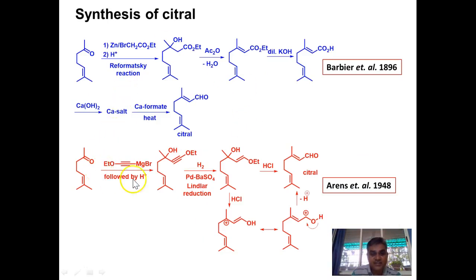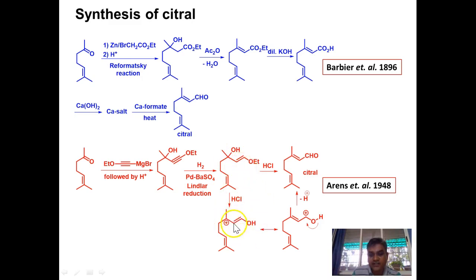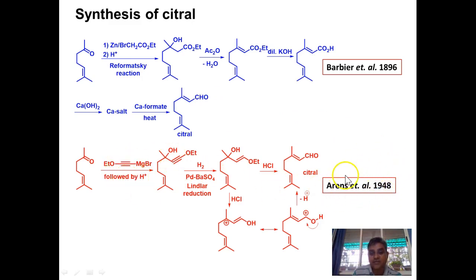An alternative synthesis uses Grignard reagent instead of the Reformatsky reagent. A Grignard reagent undergoes nucleophilic addition across the carbonyl to give a propargyl tertiary alcohol. This undergoes partial reduction with Lindlar's catalyst to give an enol ether, and the enol ether on hydrolysis gives an aldehyde. Simultaneously, dehydration of the tertiary alcohol occurs via protonation to give a carbocation, followed by an allylic shift of the double bond, ultimately yielding the citral molecule. Both syntheses date to 1896, with the Grignard-based route developed after the discovery of Grignard reagents around 1948.